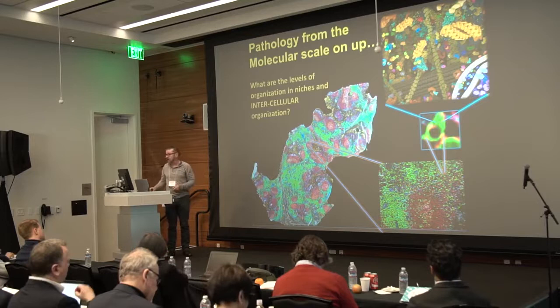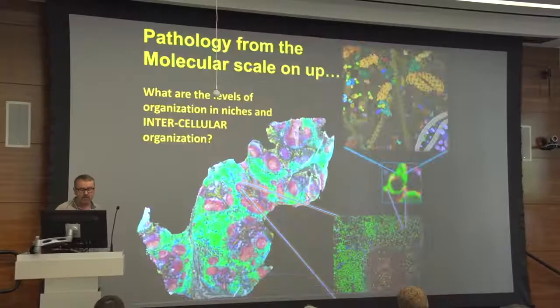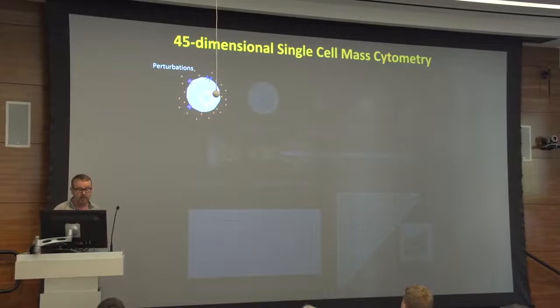I've been interested in the single cell for some time. I was a grad student with Len Herzenberg back when three parameters was the height of multiplexing that could be accomplished. Over the succeeding 20 to 25 years with fluorescence, that number has only reached about 15 to maybe 20 for high-art labs doing high-parameter protein analysis. Meanwhile the single-cell RNA-seq world has quickly moved into thousands of things read per cell, but there's a lot of missing data there as well.